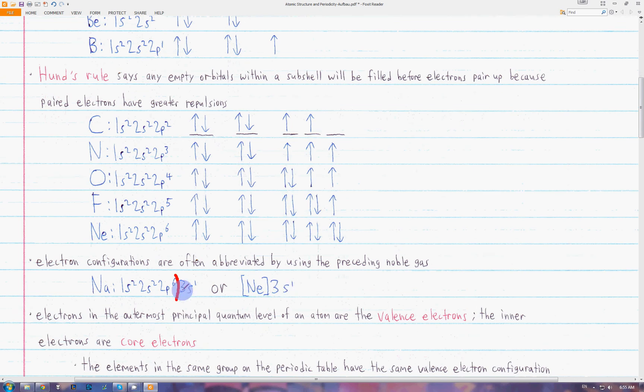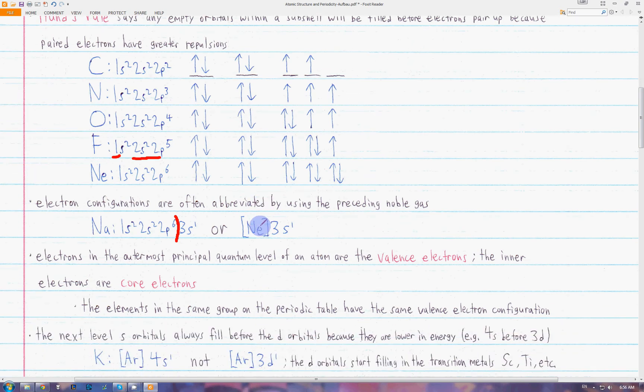We call the electrons in the outermost principal quantum level of an atom valence electrons. For example, in fluorine, the highest principal level is 2. So all of these electrons would be valence electrons, for a total of 7 valence electrons—2 in the s subshell and 5 in the p subshell. The rest of the electrons are called core electrons. Here, there would be the 2 electrons in the 1s subshell.